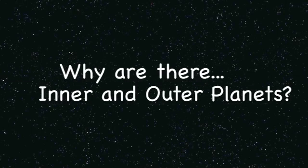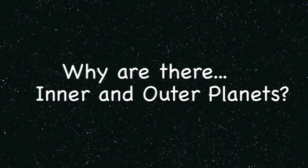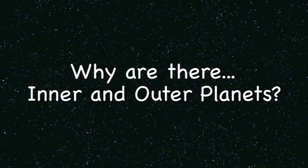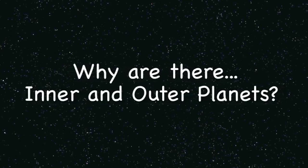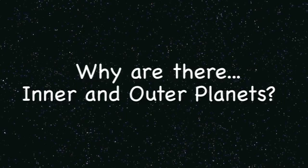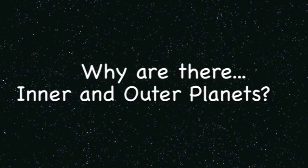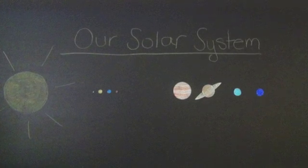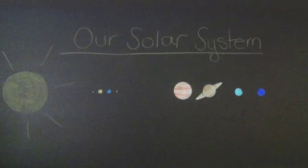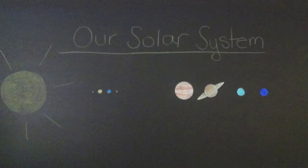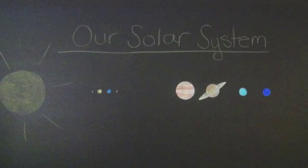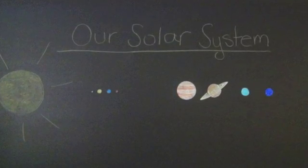Good morning, class. Today we are going to be learning about inner and outer planets. Now please take out your notebooks to take some notes. Our solar system is made up of eight planets that go around the sun. They are separated into two groups, inner and outer planets.